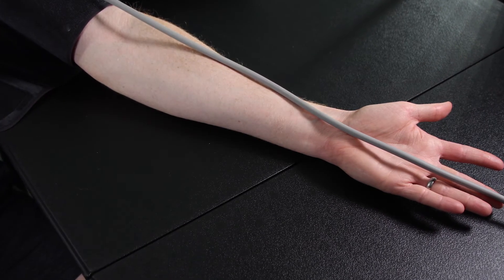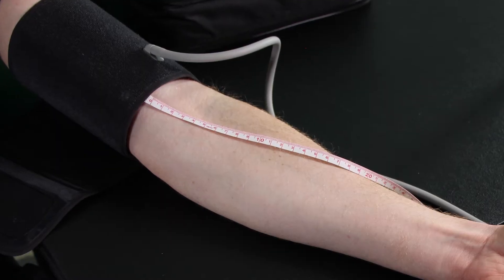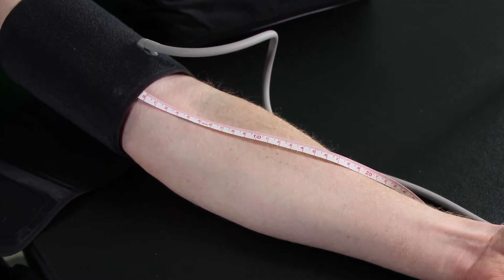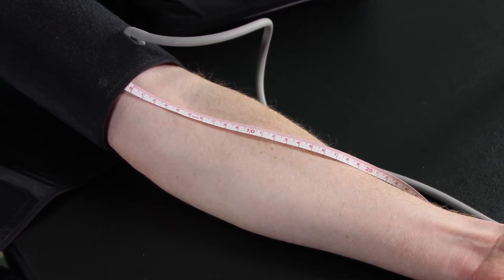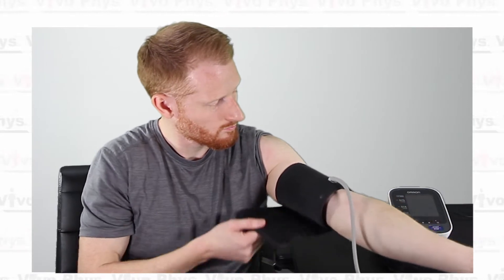This cuff should be placed about one to two centimeters or about half an inch above the elbow or the crease on the elbow and the cuff should be then wrapped with the velcro so that it's firmly attached to the arm.